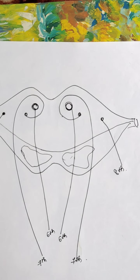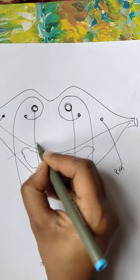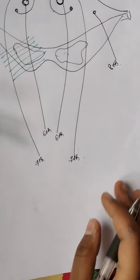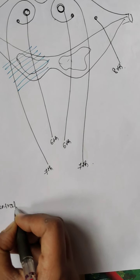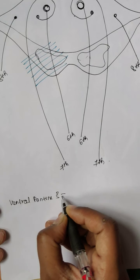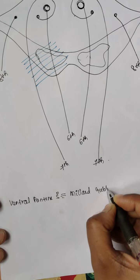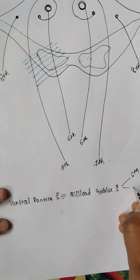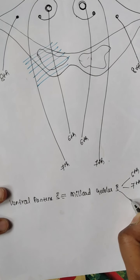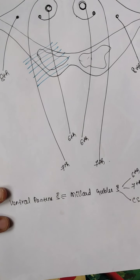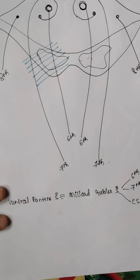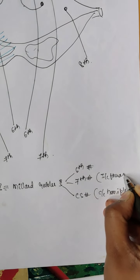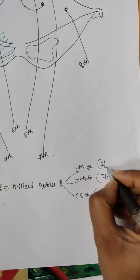What will happen if the ventral pons is affected? This is known as ventral pontine syndrome, also known as Millard-Gubler syndrome. From the anatomy, you can deduce the symptoms: if the corticospinal tract is affected, there is contralateral hemiplegia; if the 7th nerve is affected, there is ipsilateral facial palsy; and if the 6th nerve is affected, there is contralateral convergent squint.